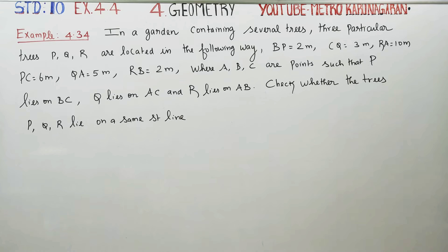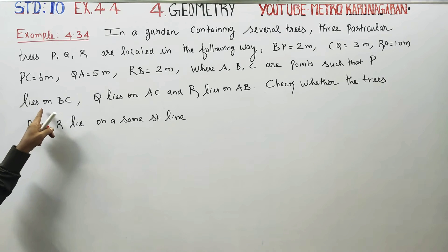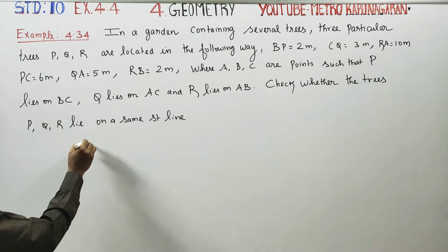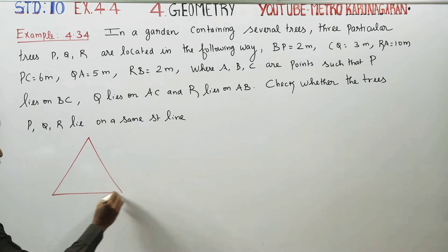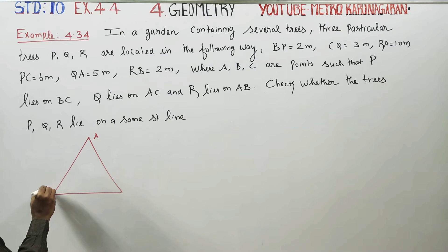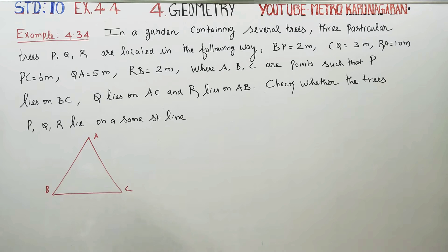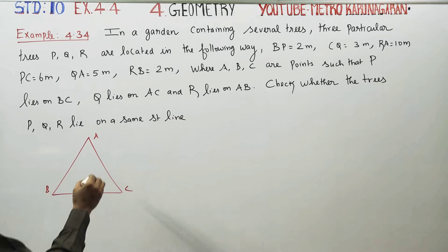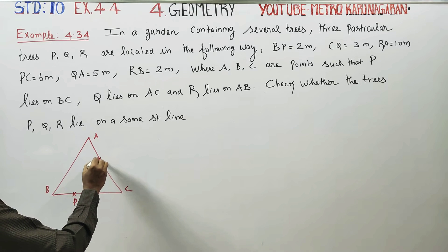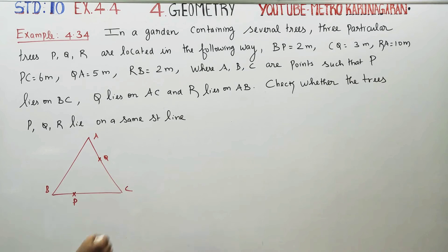ABC are the points forming a triangle, such that P lies on BC, Q lies on AC, and R lies on AB.